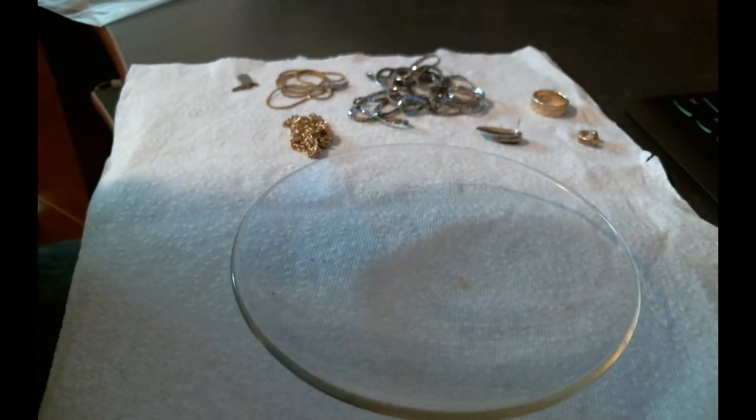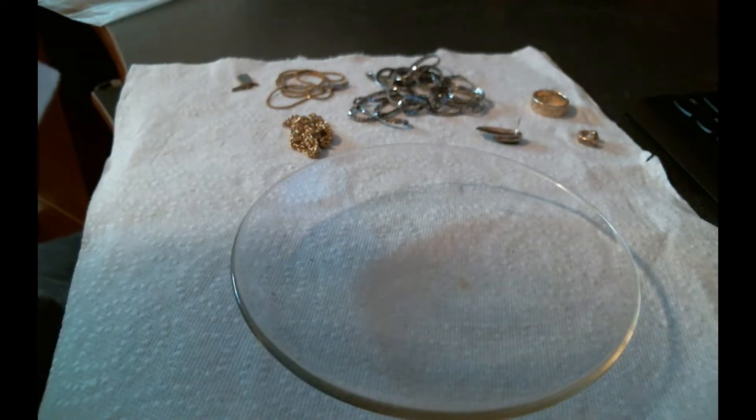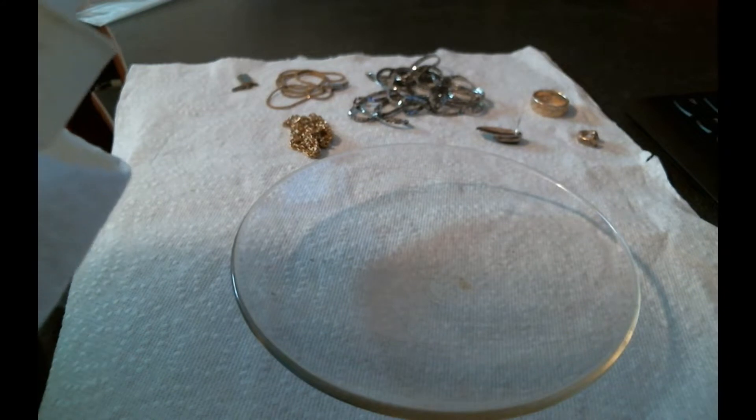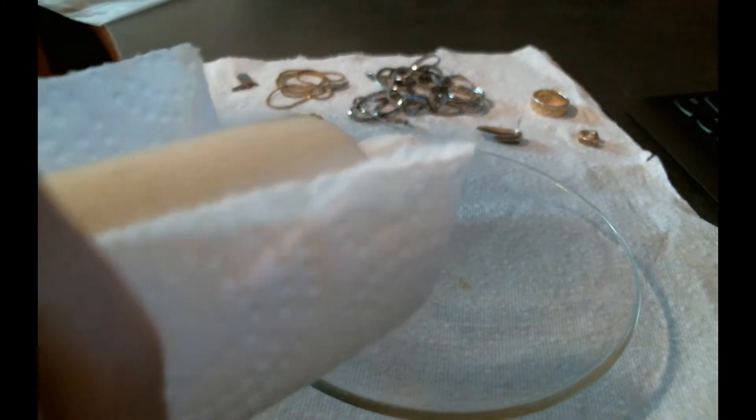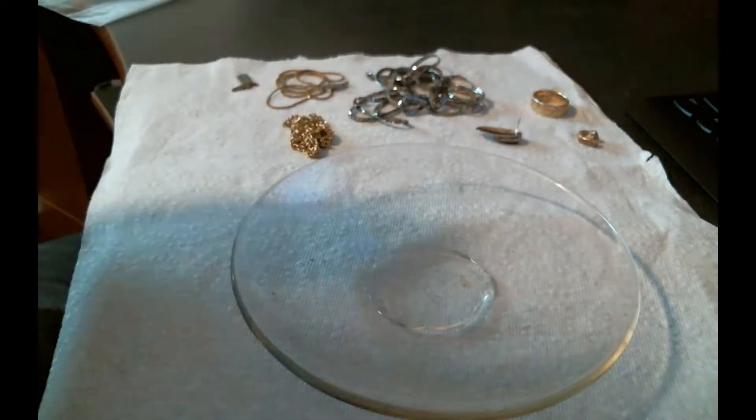Hello everybody, this video is about how to acid test jewelry. We're going to use 10 molar nitric acid. I've got a little bottle here and we're going to pour it into this dish that I've got for the demonstration.